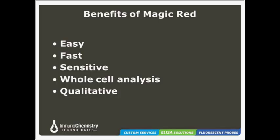These MAGIC-RED kits offer several key benefits. First, the kits are very easy to use — you simply culture your cells, add MAGIC-RED directly to the media, incubate, and analyze. Second, these kits are fast, with reactions typically starting within 15 minutes to watch the fluorescence develop over several hours; typical incubation time is only 15 to 20 minutes. The kits are sensitive, allowing you to easily distinguish positive from negative populations. You can conduct whole cell analysis as our reagents are cell-permeant, and you do not need to license cells or undergo any permeabilization steps. The kits are also qualitative, with cellular analysis using fluorescence plate reader or fluorescence microscope.